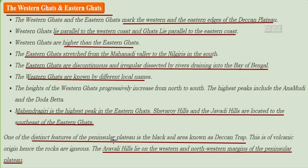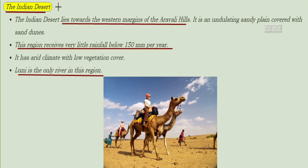Mahendragiri is the highest peak in the Eastern Ghats. Chevroy Hills and Jawadi Hills are located to the south-east of the Eastern Ghats. One of the distinctive features of the Peninsular Plateau is the black soil area, also known as the Deccan Trap.